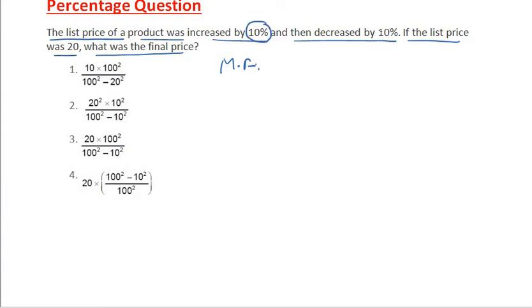When we use the multiplying factor concept, it means if something is increased by 10%, go ahead with the concept of multiplying factor. Increasing it will give 1 plus 10/100, or 1 plus 1/10. Decreasing means 1 minus 10/100, or 1 minus 1/10.